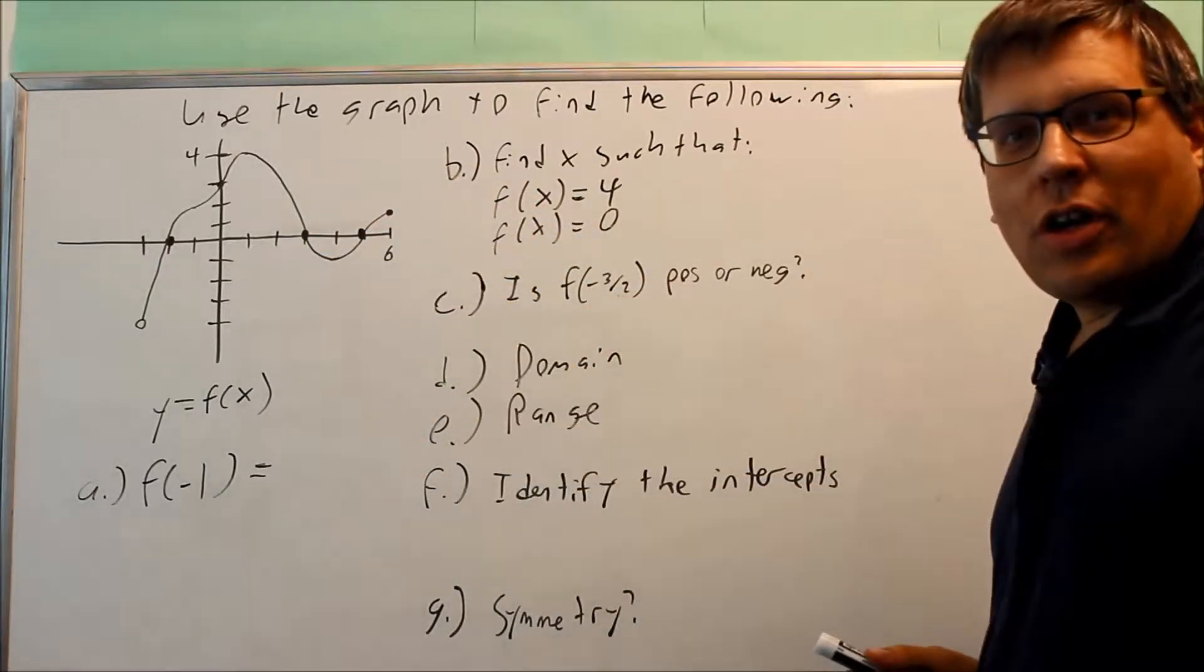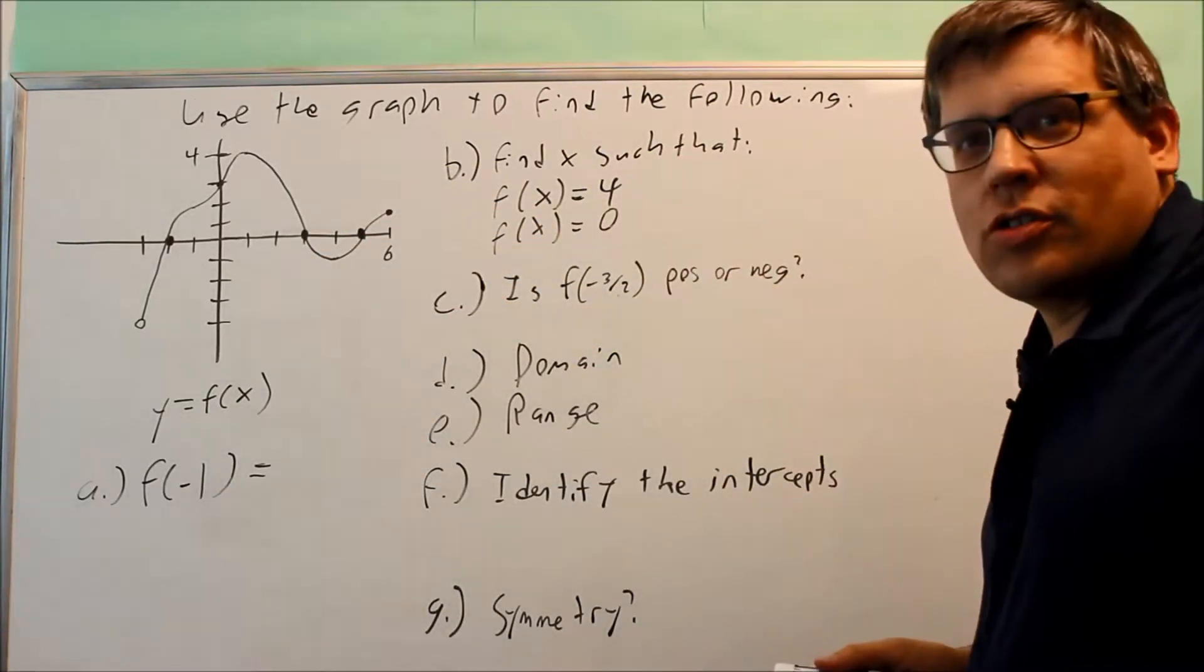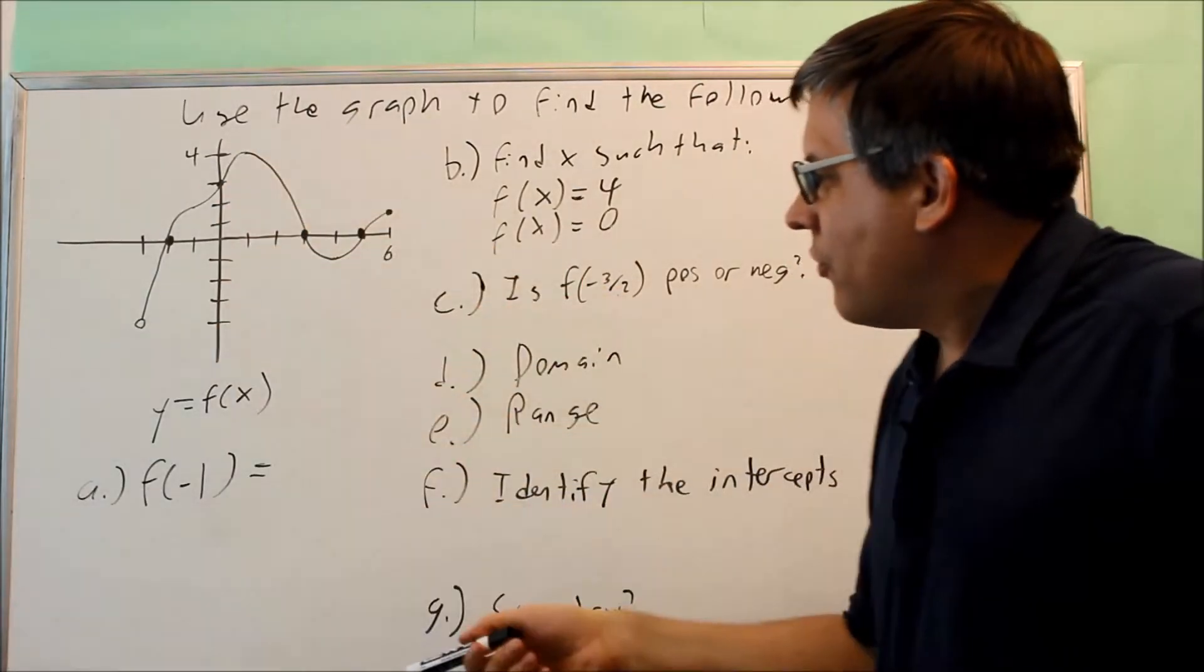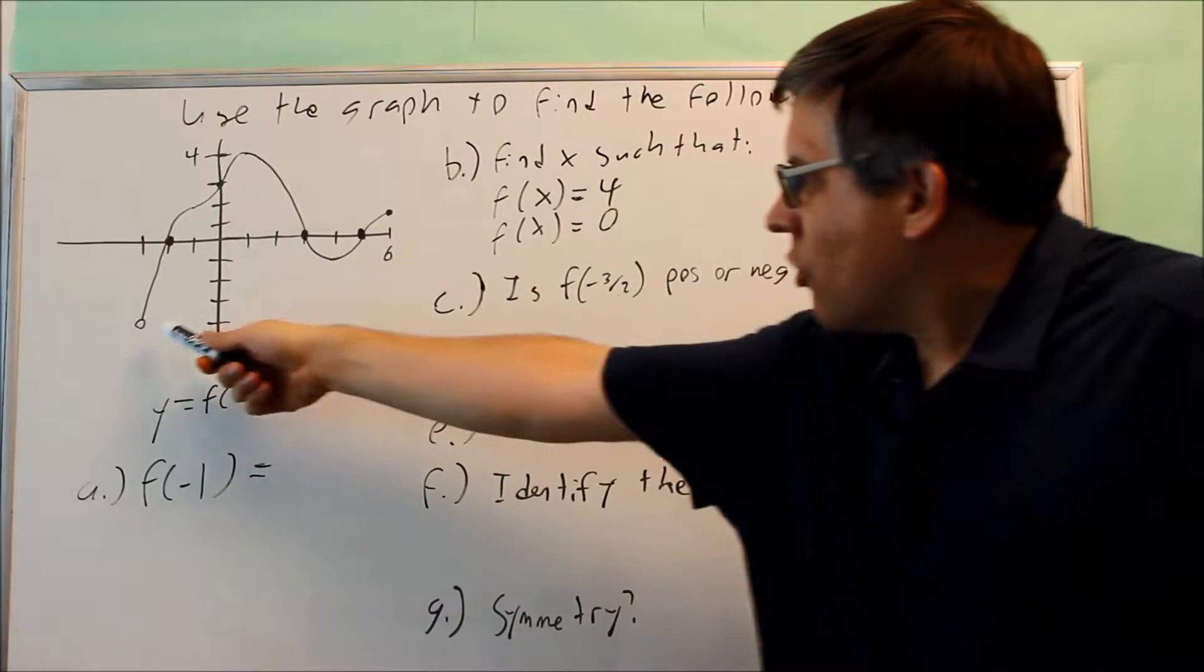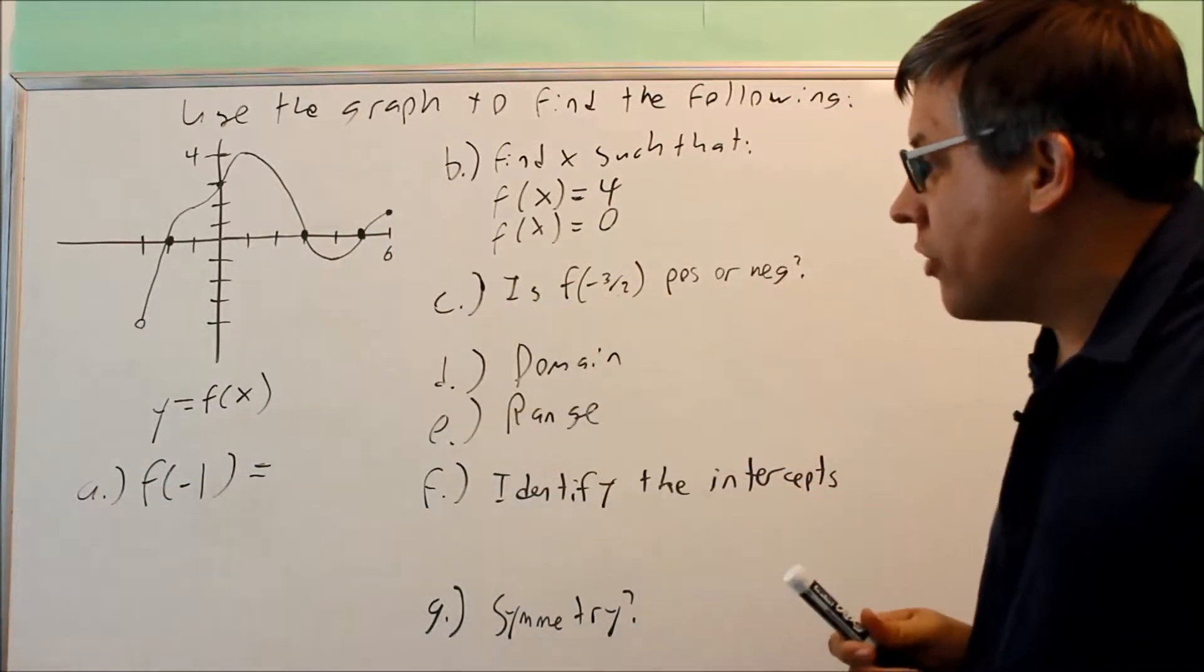We're going to use this graph to answer the following questions. This is our graph of y equals f of x. What we notice about this is there's an open circle on one end and there's a closed circle on the other end.